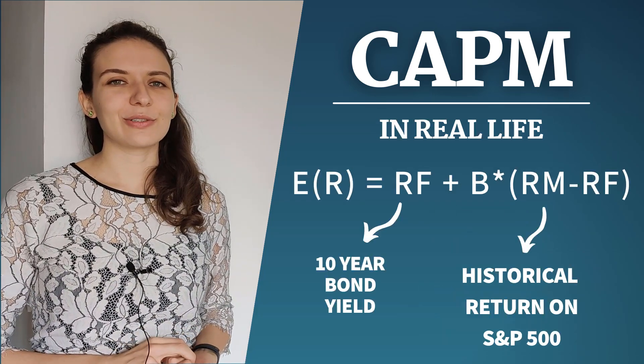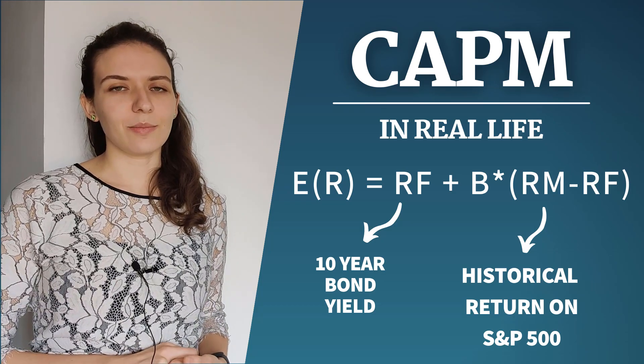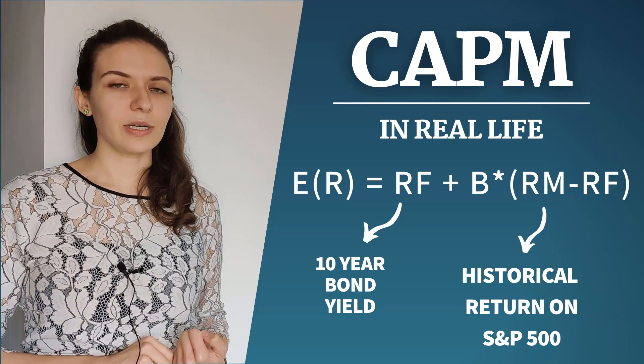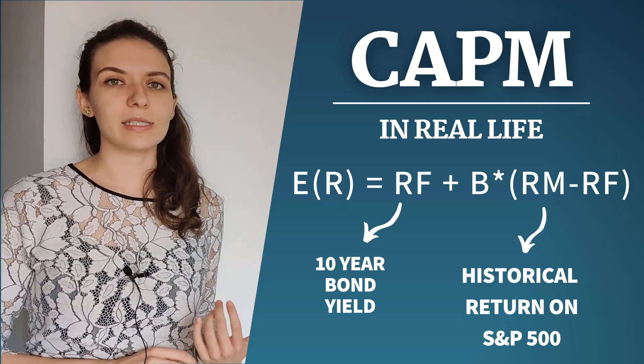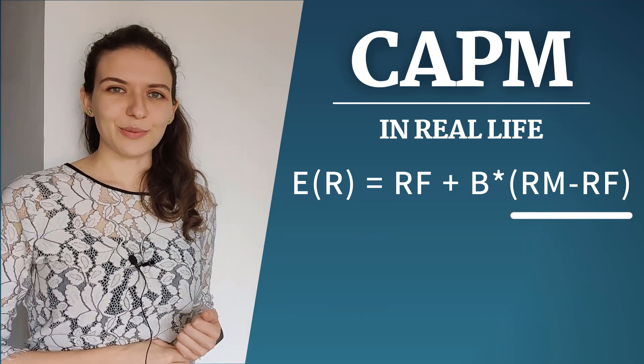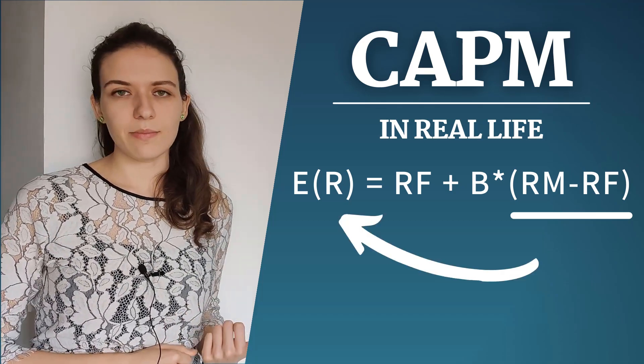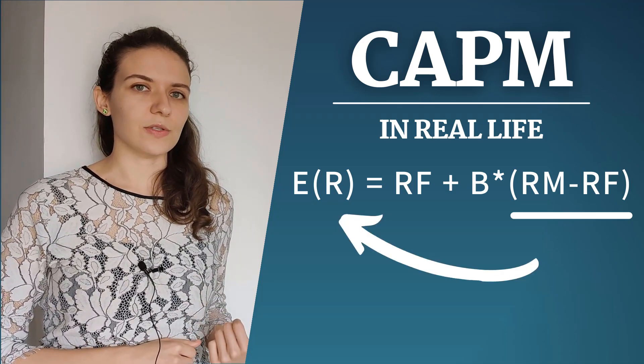In practice, the expected return on the stock market is approximated by the average historical return and that index is usually the Standard & Poor's 500 if you are analyzing a US stock. By looking at the formula, we see that the market risk premium has a direct impact on the expected return of the stock.